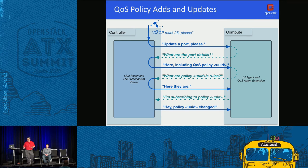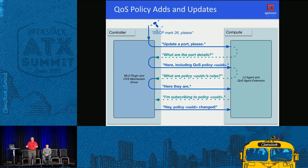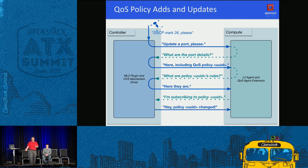Here is the interchange between the Neutron server and the Neutron agent. The reference implementation is OVS-based, using the OVS ML2 plugin and OVS mechanism driver. As part of the previous QoS work, there's an L2 agent extension that can be loaded into your L2 agent to facilitate control on the compute node.